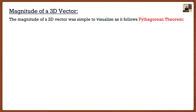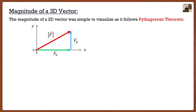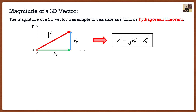Now let's talk about the other things. In 2D vectors we had Cartesian vector form, giving us the magnitude and the unit vector. The magnitude in 2D is simply the square root of fx squared plus fy squared — a nice right triangle, everything works out. So how about in three dimensions?